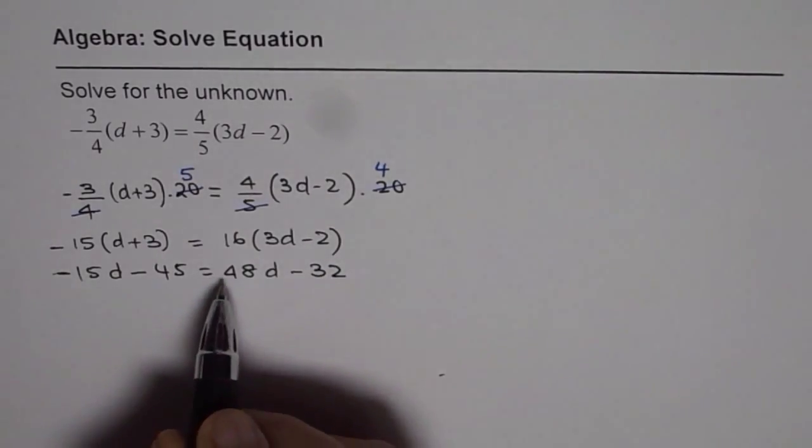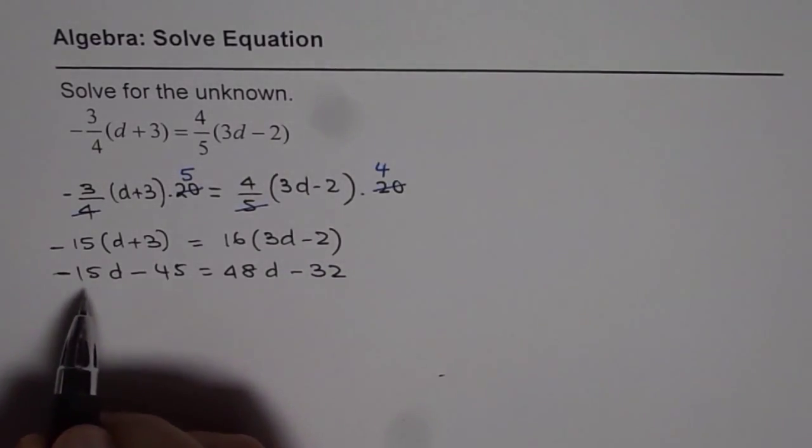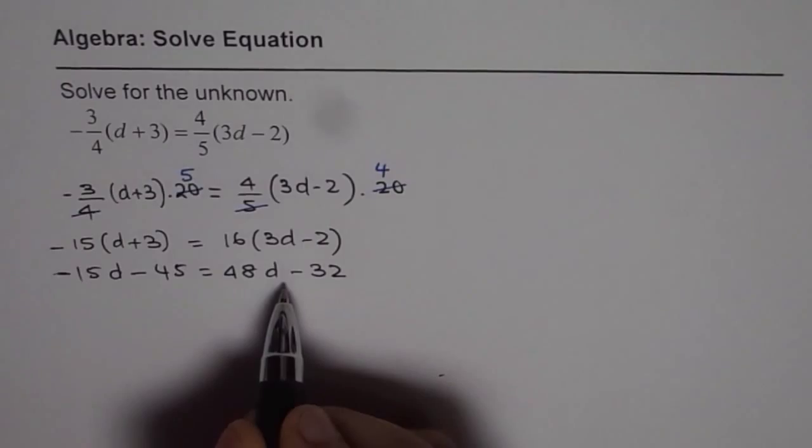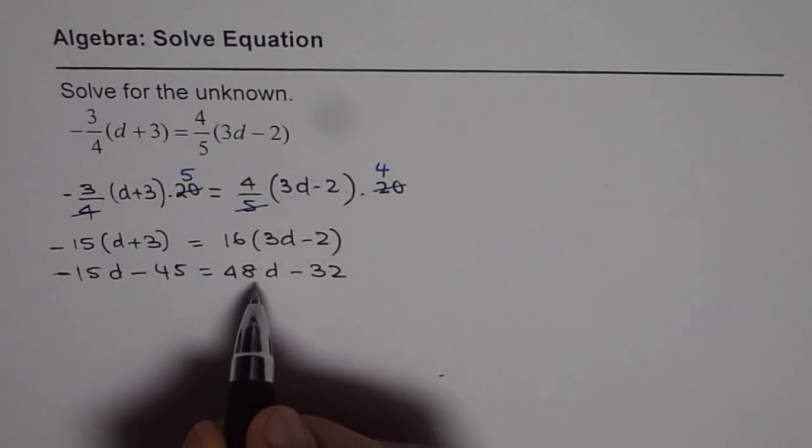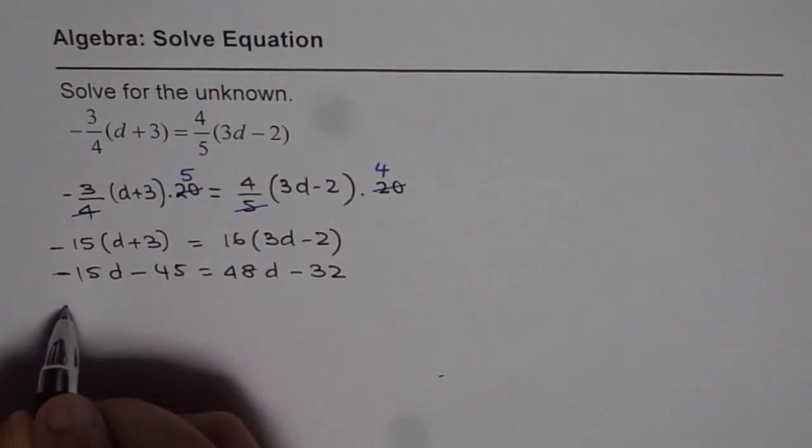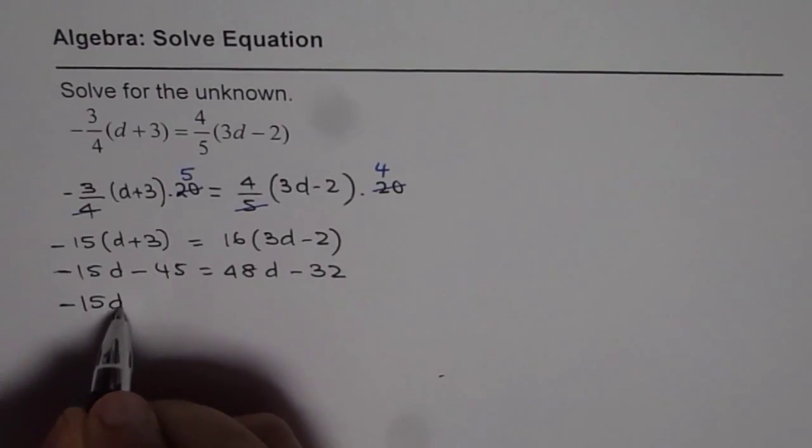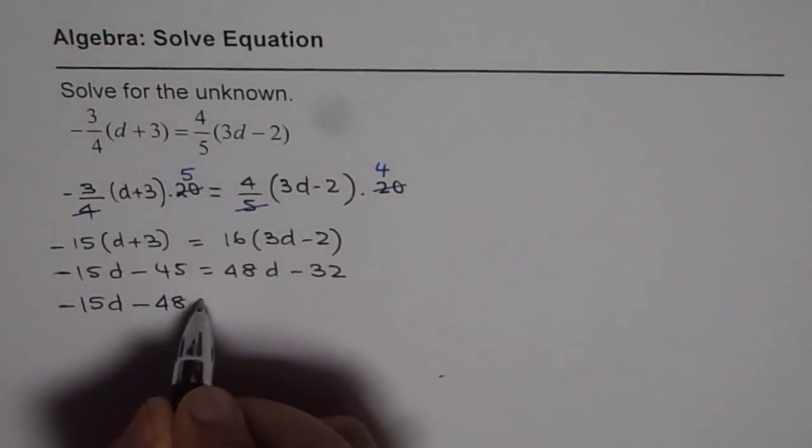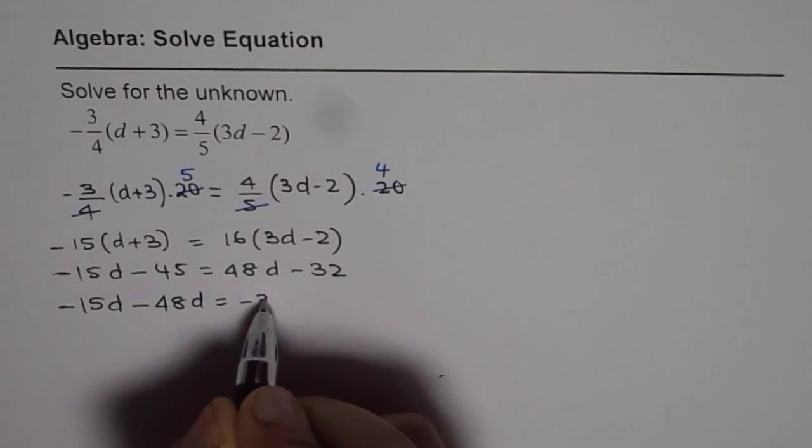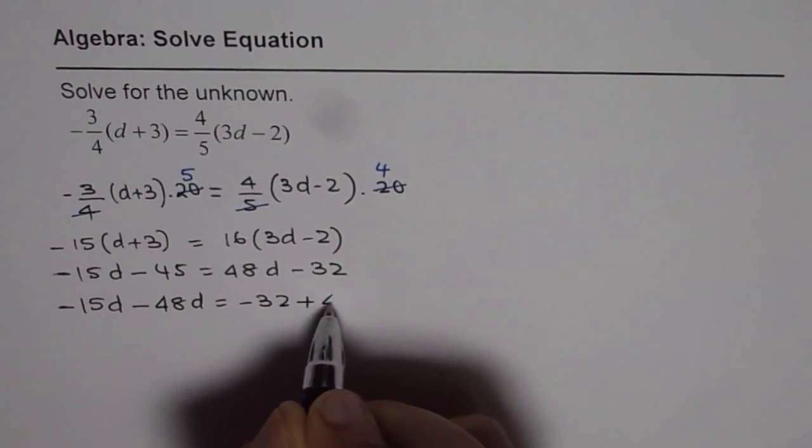Let us bring the variables together. We can take these on the right side, but I prefer to keep variables on the left. So minus 15d minus 48d equals minus 32 plus 45.